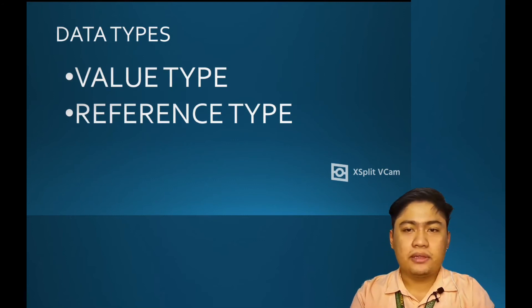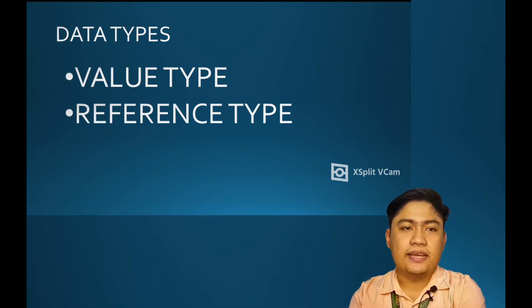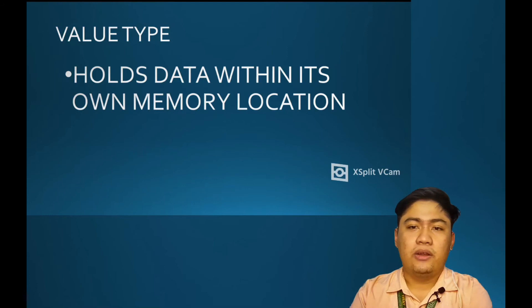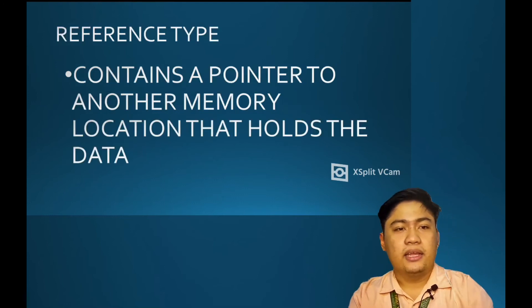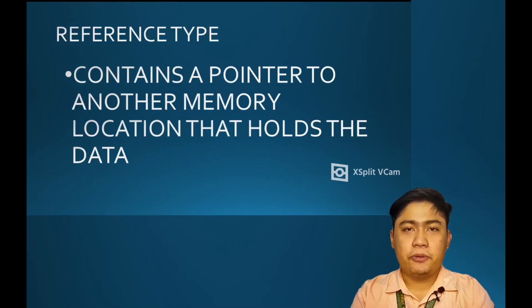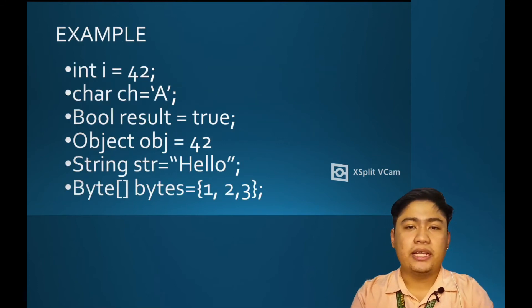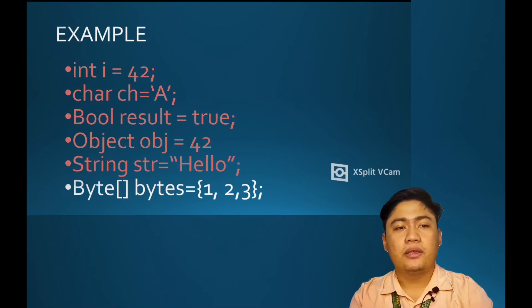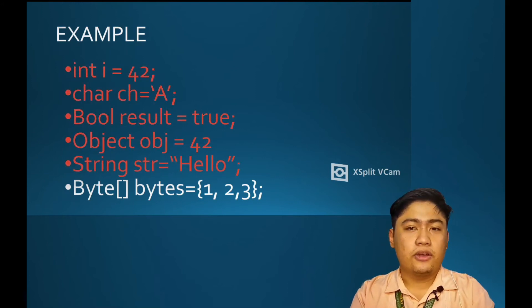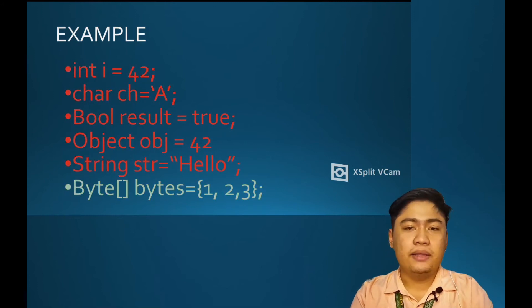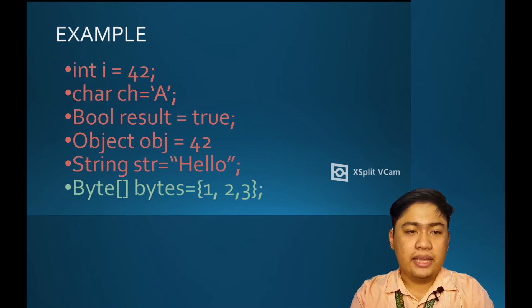Value type holds the data within its own memory location, while reference type contains a pointer to another memory location that holds the data. In the example shown, the color red represents examples of value type, and the color green represents examples of reference type.